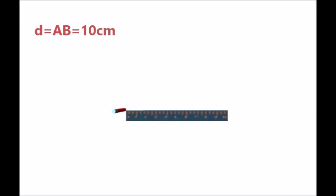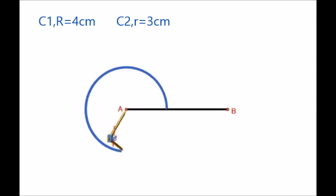The distance between the centers of the circles given is 10 cm. So draw a line segment of length 10 cm and name it as AB. With A as center and radius 4 cm, draw a circle. Let it be circle C1.